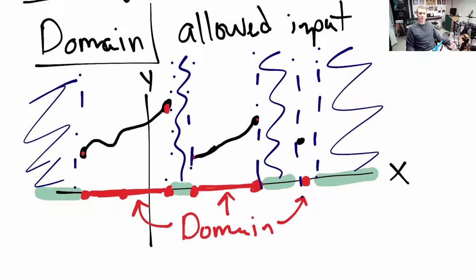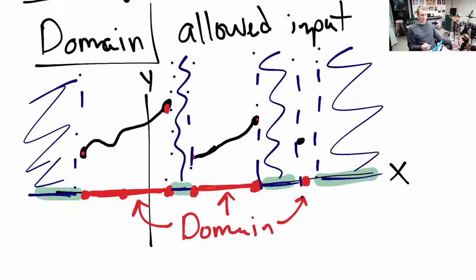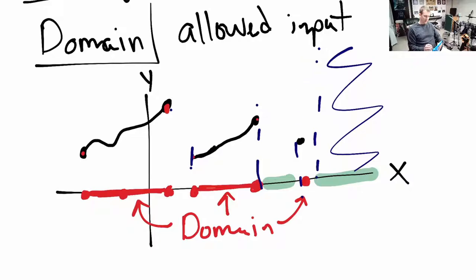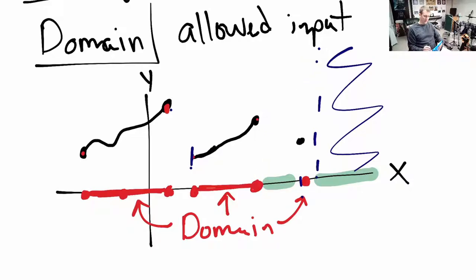Your graph, your function, doesn't have anything to say for those inputs below. It has nothing — no rule, no link. If you were to try and plug something in in those intervals, this function wouldn't know what to do with it, which means those values are not allowed. Those are not allowed inputs, so they are not in the domain. So I'll try my best to erase most of this, and then we'll write down in interval notation what our domain is.